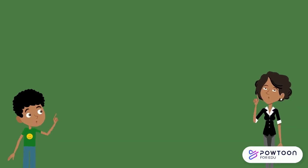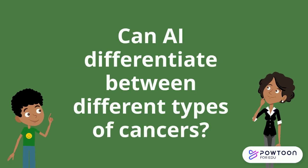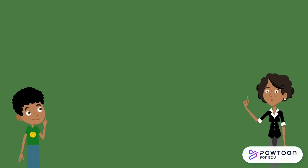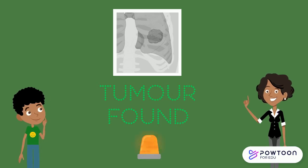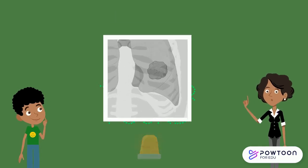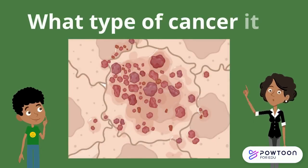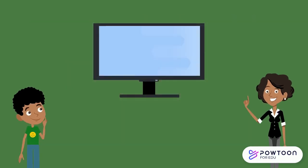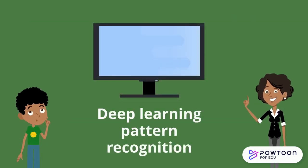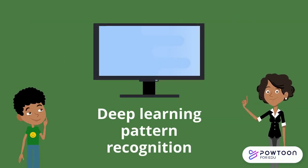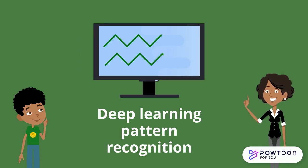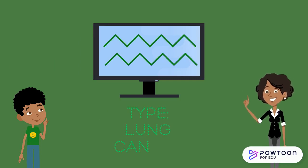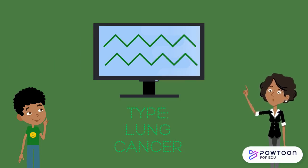Can AI differentiate between different types of cancers? Yes, it can actually. So once the tumor has been located, we can take a closer look at the microenvironment and determine what type of cancer it is. AI technology can make use of deep learning pattern recognition to quickly scan through thousands of images and detect critical regions. These can help it determine the exact type of cancer at a much faster rate than ever before.